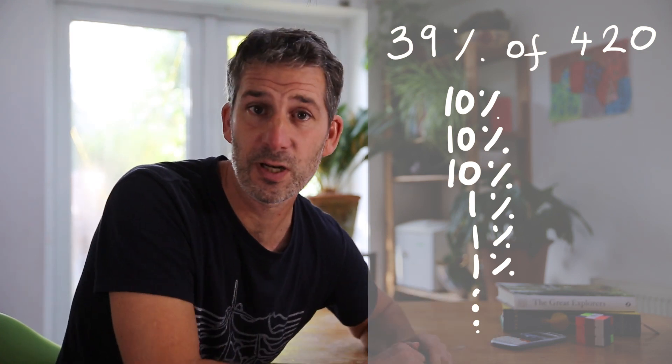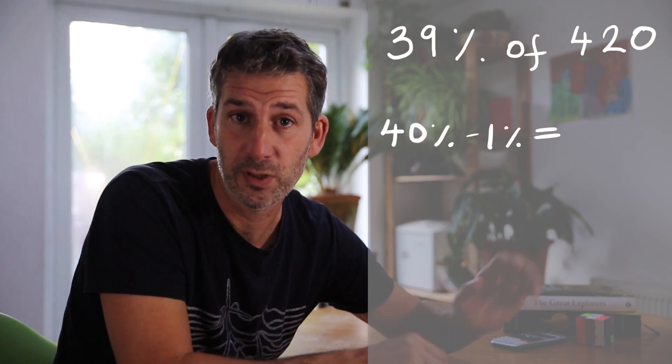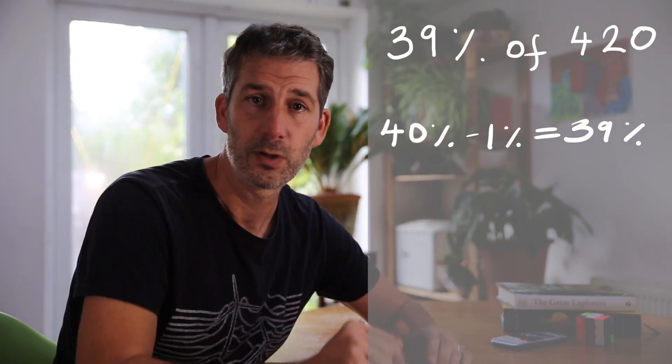For example, let's say we wanted to find 39% of 420. Using the old method we might have found 10% and then added on another 10%, then added on another 10%, and then added on 1%, 1%, 1%, 1%, and so on until we've got up to 39%, or at least that's one way that we could have done it. I'm going to suggest a more efficient way would be to find 40% and then just take away 1% to get you down to 39%. So really that's the big difference with this one is that instead of building up, we're kind of building down until we get down to our percentage.